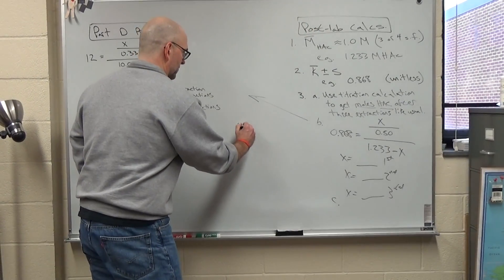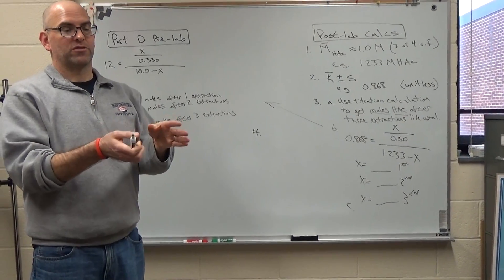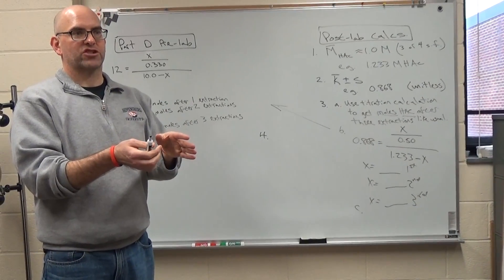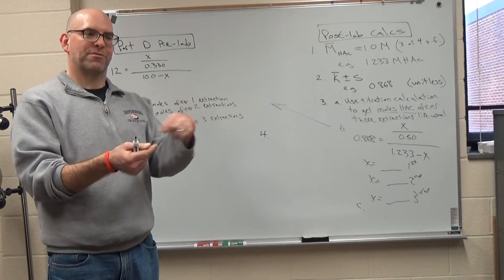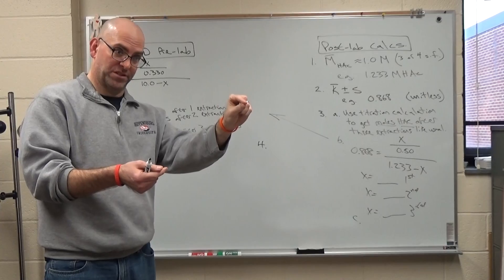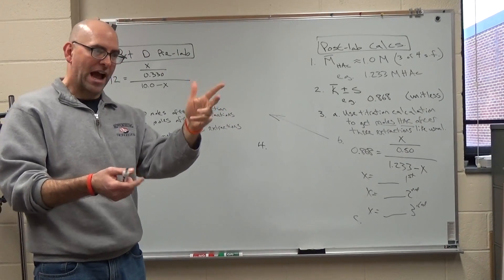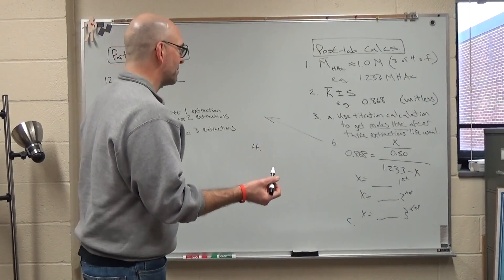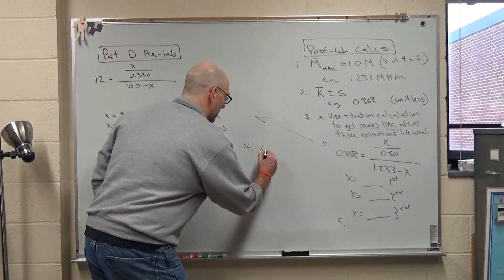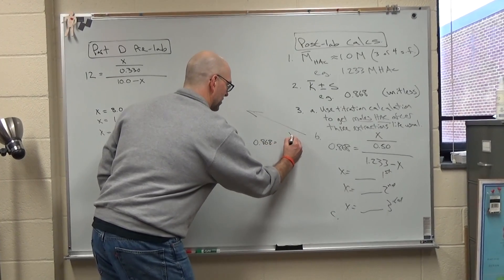Number four, this is an interesting question. Number four asks you to calculate if you do the extraction not three times with half a mil, but one time with 1.5 mils, which is the more efficient, effective extraction? So in this case, you do the same thing. You set up your K, your X, and instead of .5 mils, you do 1.5 mils.